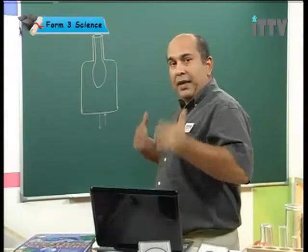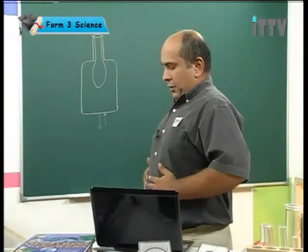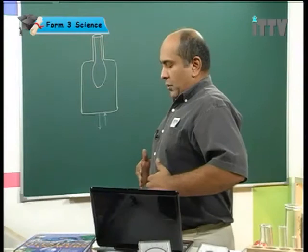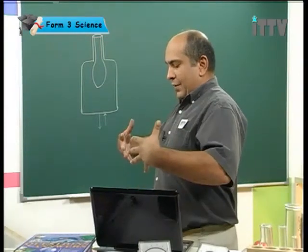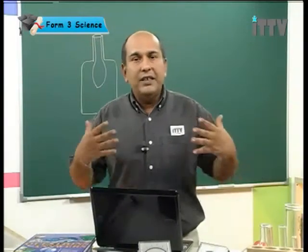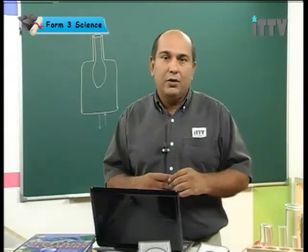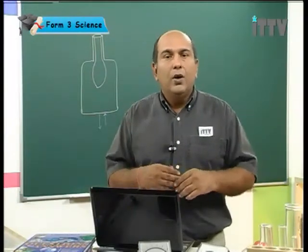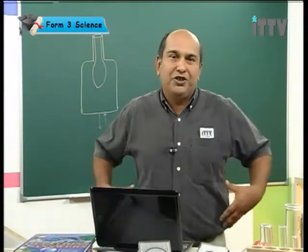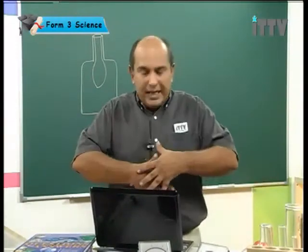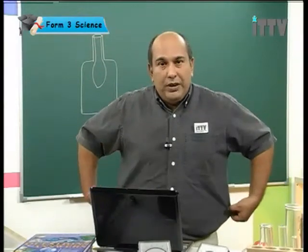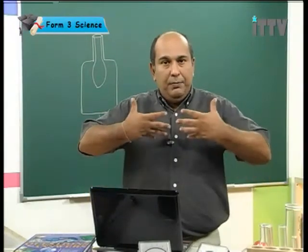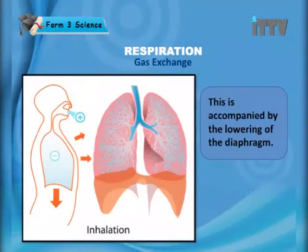Watch my ribcage moving up and down. When I breathe in, notice my ribcage has moved up and come out slightly. When you breathe in, your ribcage moves up and out. That is the first movement, and it's done by the outer intercostal muscles contracting. A simple way to remember which muscle it is: if you want to make this area larger, you pull your shirt outwards — so the outer intercostal muscles contract, and your ribcage moves up and out.